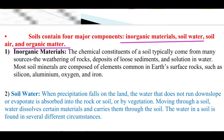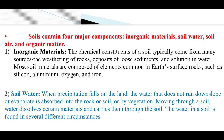The chemical constituents of soil typically come from many sources: the weathering of rocks, deposits of loose sediments, and dissolution in water. Most soil minerals are composed of elements common in the earth's surface rock, which are silicon, aluminum, oxygen, and iron.